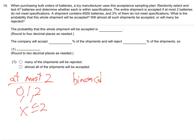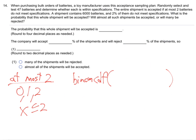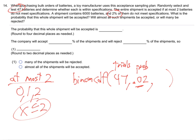So it's going to be binomcdf. The number of trials is 47 — we're testing 47 batteries. Each time, the chance it's bad is two percent. And we want two or less bad, so the x value is two. You're looking at 47 batteries, 47 trials, each time the chance the battery is bad is two percent, and you accept if two or less are bad.